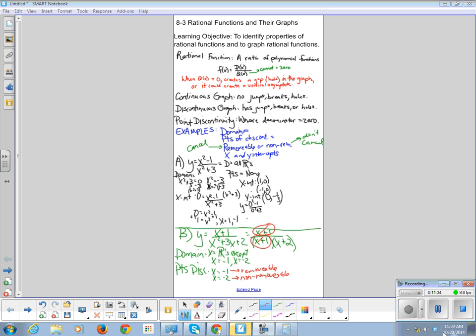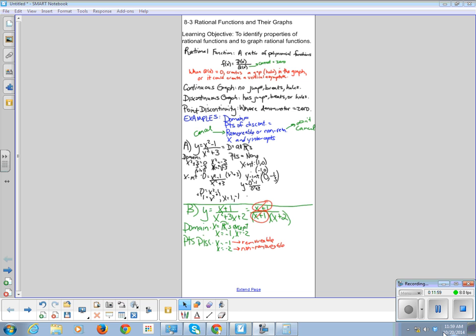All right, x and y intercepts. The y intercept is when x is equal to 0, and the x intercept is when y equals 0. So let's do the y intercepts. So when x is equal to 0, I get 1 over 2. So the y intercept is at 0, one half.